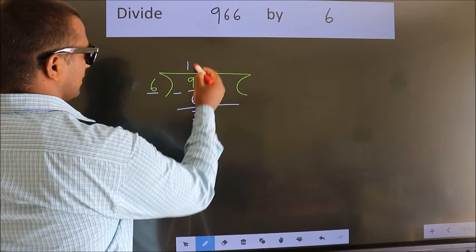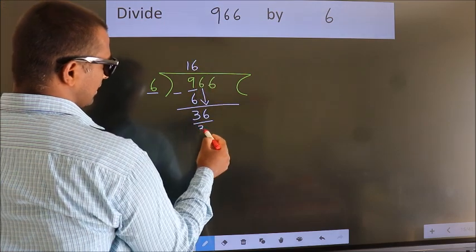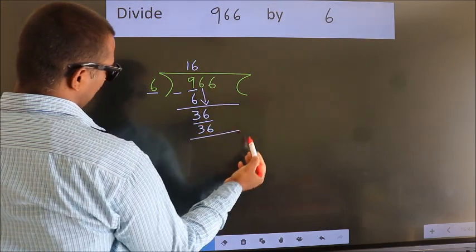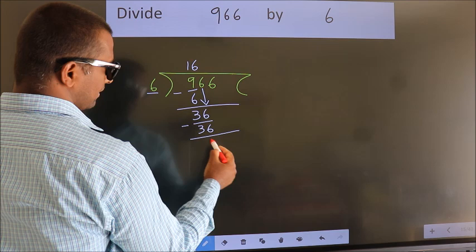In 6 table. 6, 6, 36. Now, we subtract. We get 0.